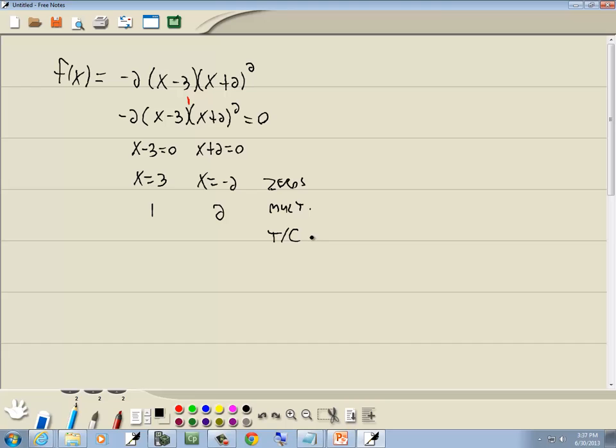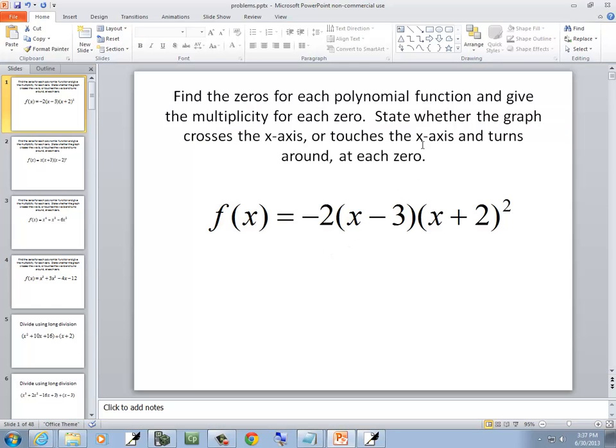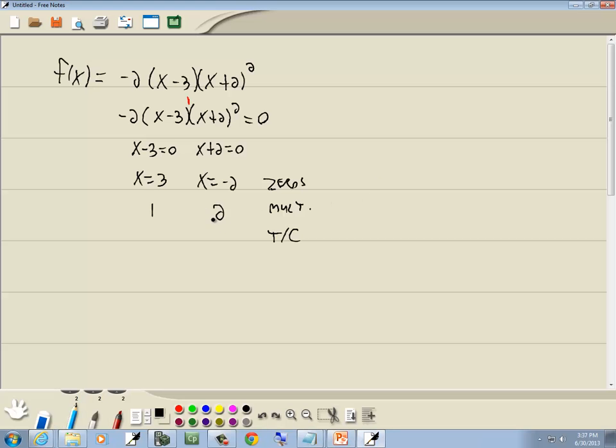Now the last thing they're asking is whether the graph crosses the x-axis or touches the x-axis and turns around at each zero. Well whenever you have a multiplicity of 2, it's going to touch. Now when you have multiplicity of 1, that crosses. Let's go graph this just to confirm that.